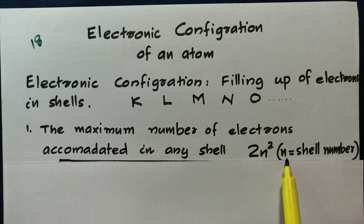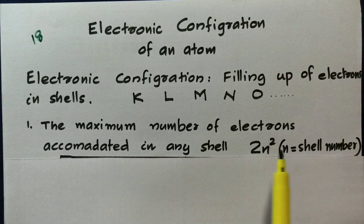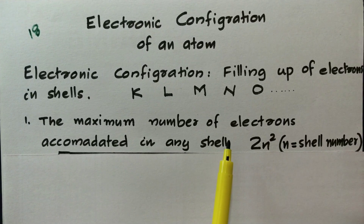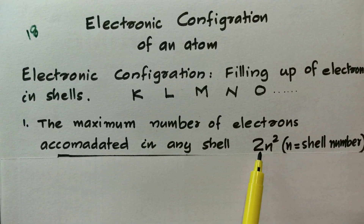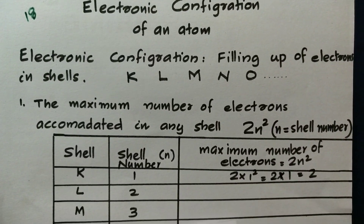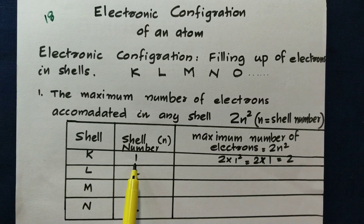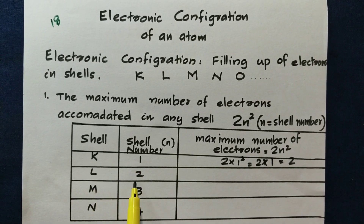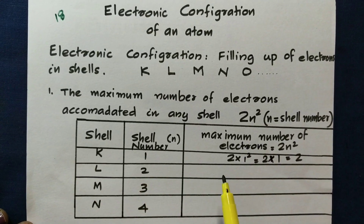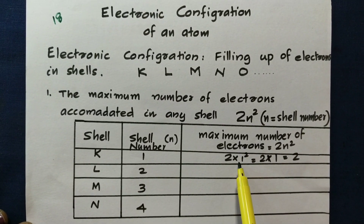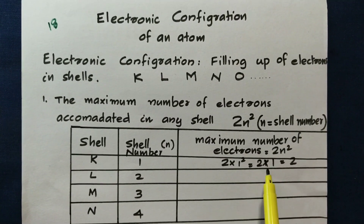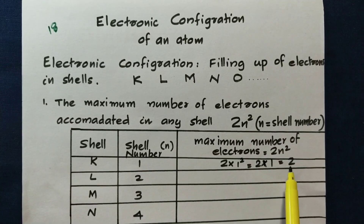The formula is 2n². Write the number 1 and put it because K shell is n=1. Put n=1 for K shell, n=2 for L shell, n=3 for M shell. The formula is 2 into n squared. So for K shell: 2 into 1 squared, that is equal to 2.